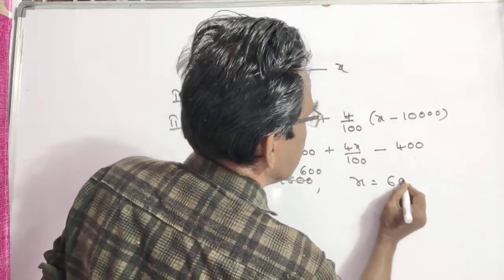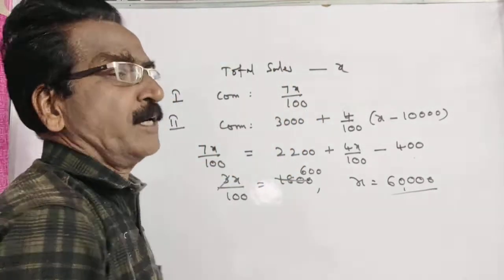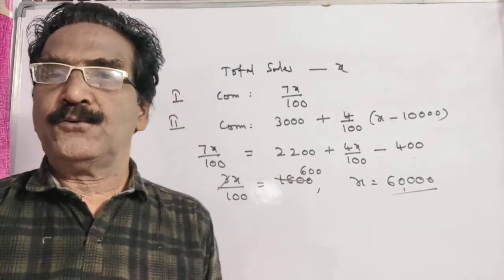X is equal to 60,000 is your answer, friends. 60,000 is your answer. Okay friends, thank you. Have a nice day.